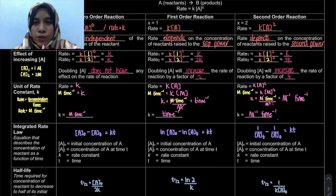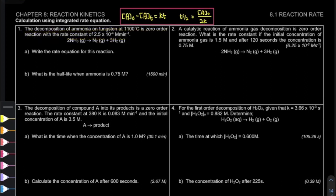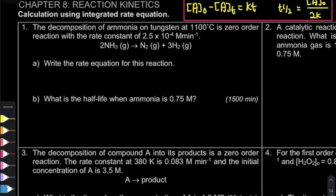Let's do the examples. Let's look at the example on page 14. We extract the information given: K is equal to 2.5 × 10⁻⁴ molar per minute.